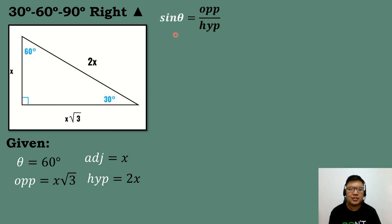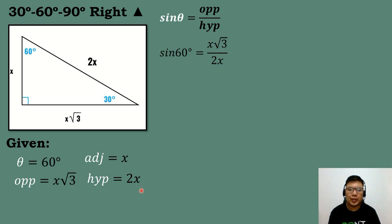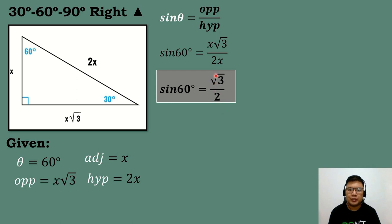Let's solve for sine 60 degrees. Substitute the value of theta, which is 60 degrees. The opposite side is equal to x square root of 3 all over the hypotenuse, which is equal to 2x. Simplifying, x over 2x equals 1 half, so this will be square root of 3 over 2. Sine 60 degrees is equal to square root of 3 over 2.